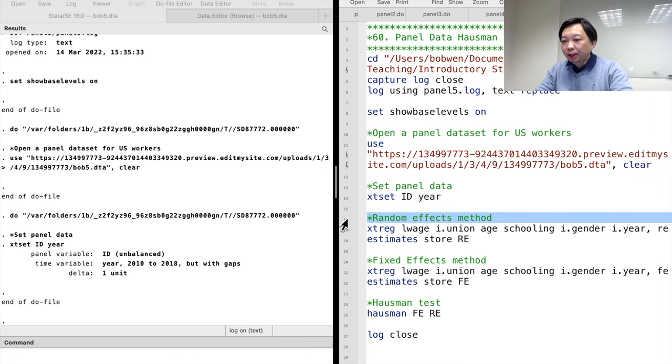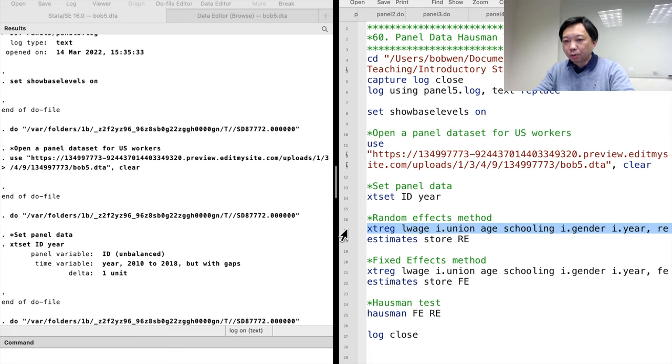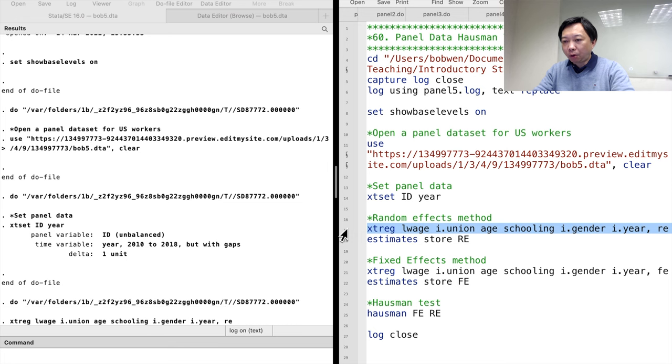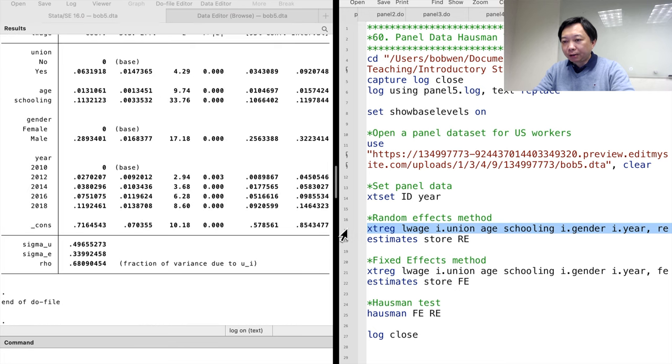Let's continue to use the data set for the US workers. We estimate the union status effect on wages. We first use the random effects method by typing xtreg, log wage, union, age, schooling, gender, and year dummies. We use the RE option to perform the random effects. Then we store the results by typing estimates store and then give it a name RE.